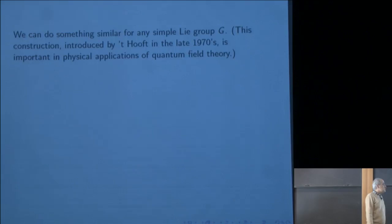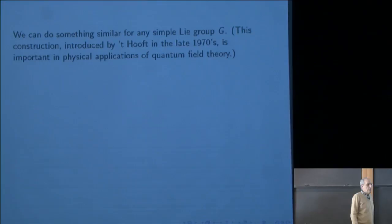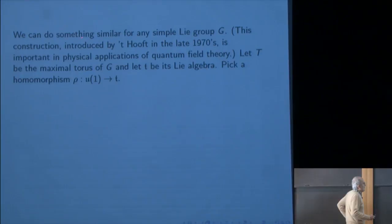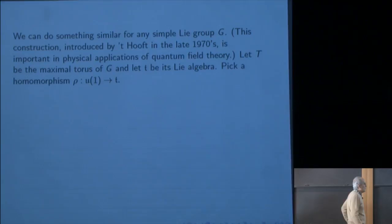We can do something similar for any simple Lie group G. The construction is important in physical applications of quantum field theory. For physicists, this started with the work of Goddard, Nuyts, and 't Hooft — what they were doing was saying that the dual of electric charge was this kind of singularity in the Bogomolny equations. To generalize, we let T be a maximal torus of G with abelian Lie algebra t. We pick a homomorphism from U(1) to t. Up to conjugation, such a homomorphism is equivalent to a dominant weight of the dual group, corresponding to a representation of the dual group.